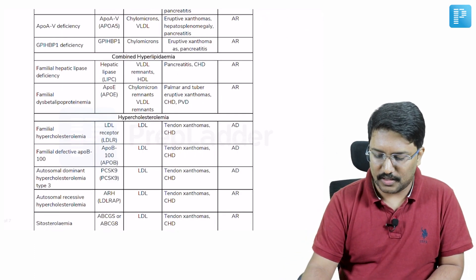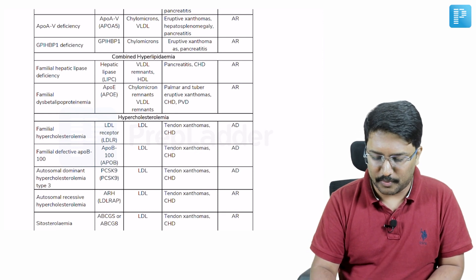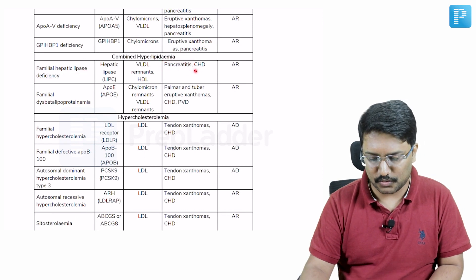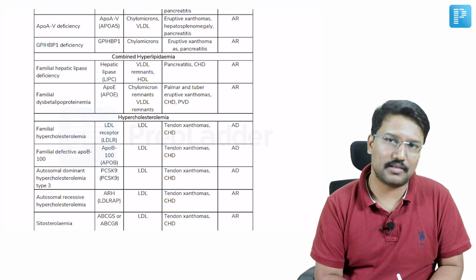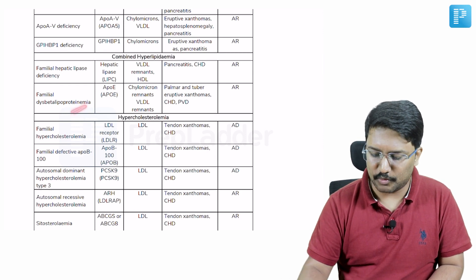What are the findings that you would see in case of combined hyperlipidemia in terms of clinical findings? Familial hepatic lipase deficiency may be associated with pancreatitis, and combined hyperlipidemia is often associated with increased coronary vascular disease risk.